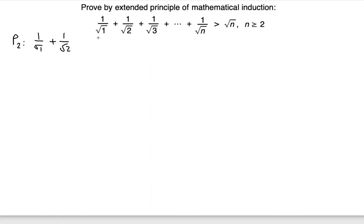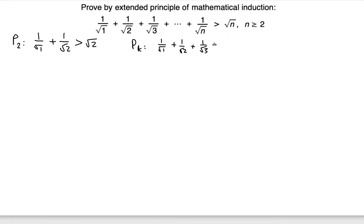...is supposed to be greater than √2, because we're evaluating at n = 2. The P(k) statement reads — substituting n with k — 1/√1 + 1/√2 + 1/√3 + ... + 1/√k is greater than √k.